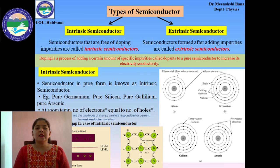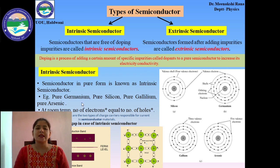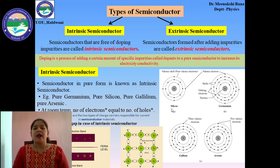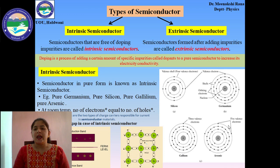At room temperature, in case of intrinsic semiconductors, the number of electrons and the number of holes are equal. These holes and electrons are the two types of charge carriers responsible for the flow of current in semiconductor materials. The Fermi level in intrinsic semiconductors lies between the valence band and the conduction band. Silicon has 4 valence electrons, germanium also has 4, while gallium and arsenic have 3 and 5 valence electrons respectively.